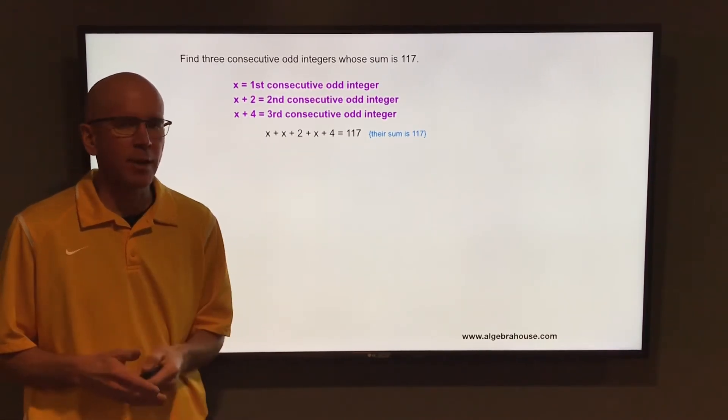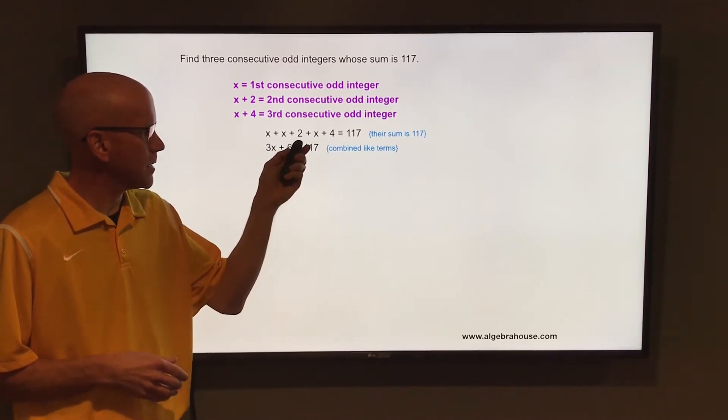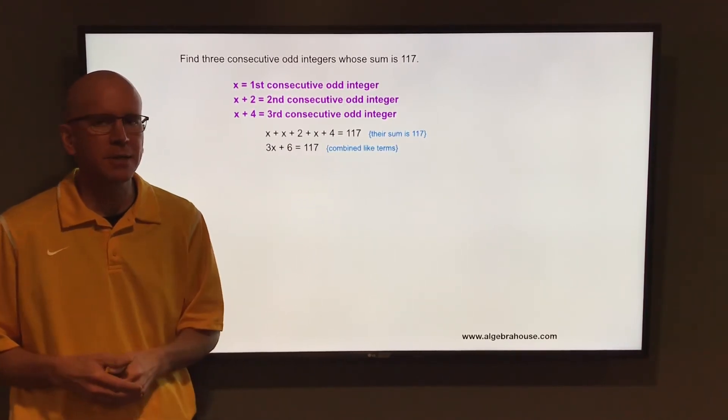So to solve that for x, combine the like terms. x, x, and x, that'd be 3x. 2 and 4 is 6. So 3x plus 6 equals 117.